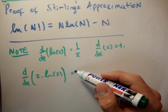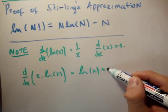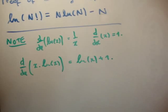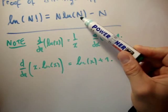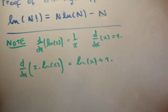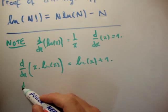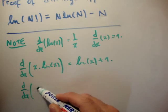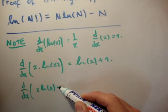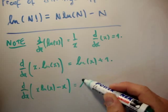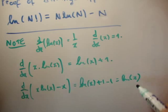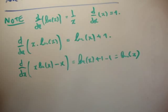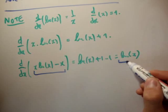The product rule — excuse me — gives us the natural logarithm of x plus 1. So remember, we're trying to get x times the natural logarithm of x minus x. So what if we try and get the derivative with respect to x of x times the natural logarithm of x, minus x? We get the natural logarithm of x plus 1, minus 1, which is just the natural logarithm of x. So we've now found an expression which, when differentiated, gives the natural logarithm of x.